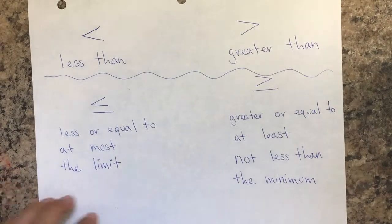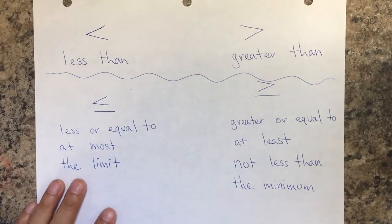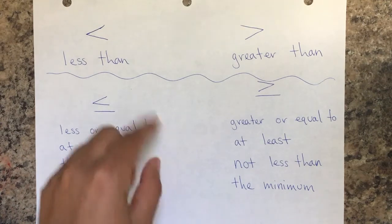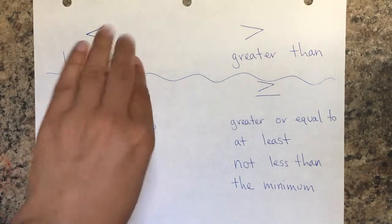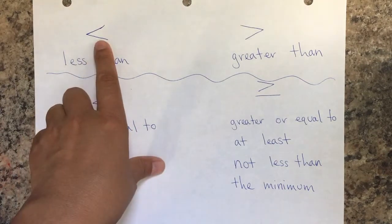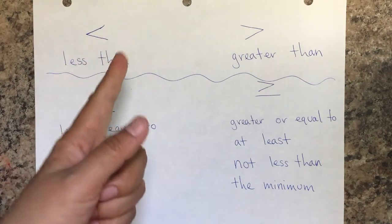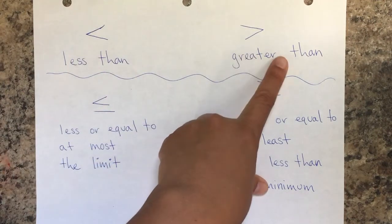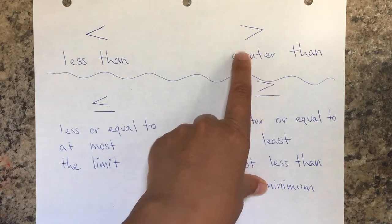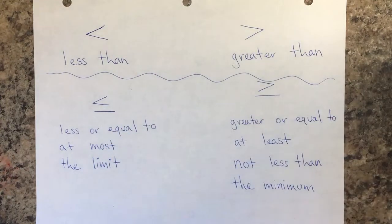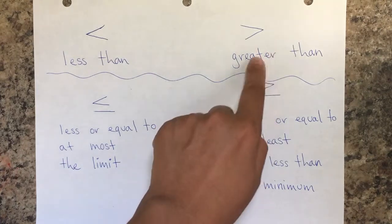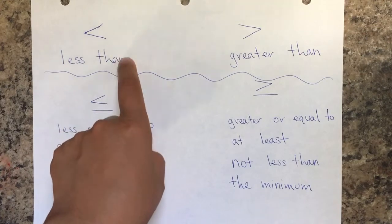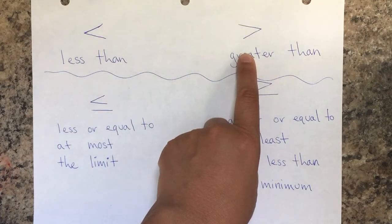With inequality symbols, it means that it's not exactly one value — it's less than the value and it can be many values. For example, if it says less than five, it can be four, three, two, one, zero, and even negatives. Greater than is also a range — not one specific answer. It does not include the number itself.